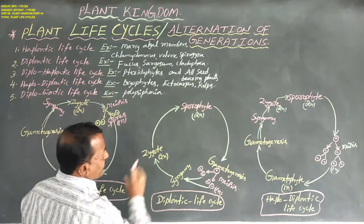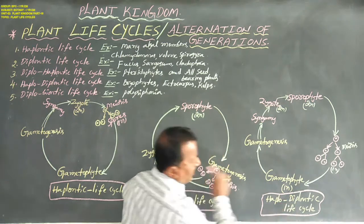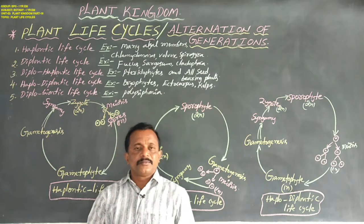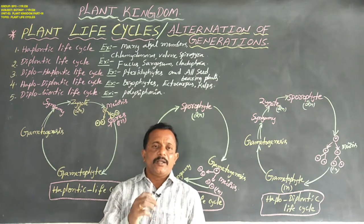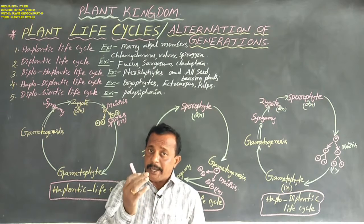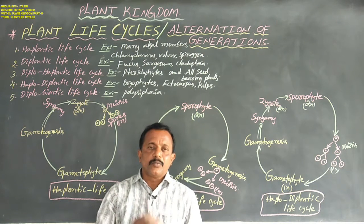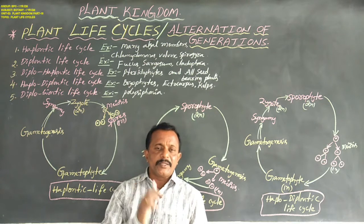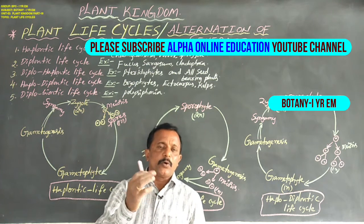Let us discuss about mainly three types of plant life cycles. One is haplontic life cycle, second one is diplontic life cycle, third one is haplo-diplontic life cycle. This is the haplontic life cycle. The sporophytic plant body, especially in the algal members — examples for most of the algal members such as Chlamydomonas species, Volvox, and Spirogyra. In general, the algal members — the thallus body or plant body — is generally sporophytic.